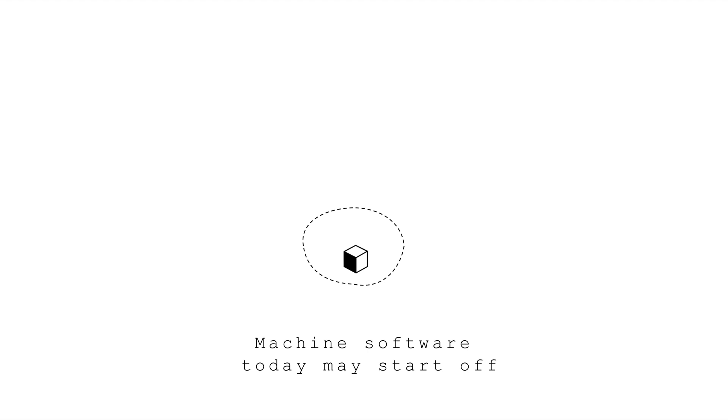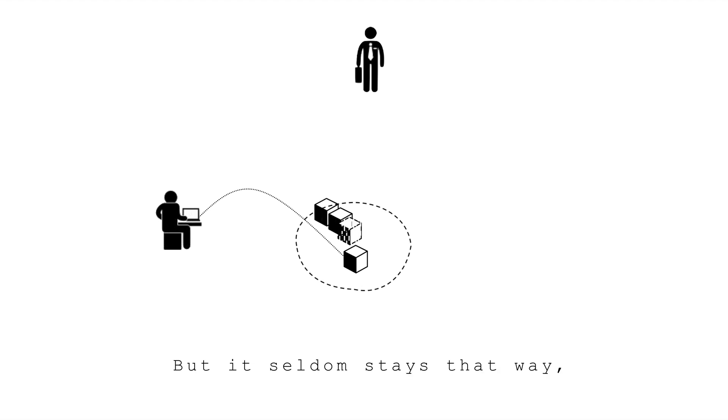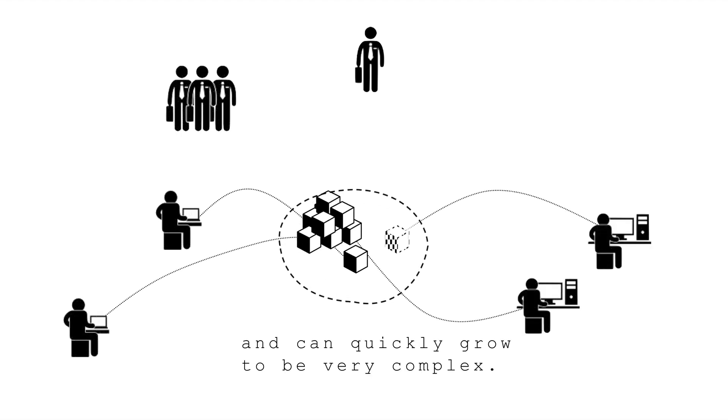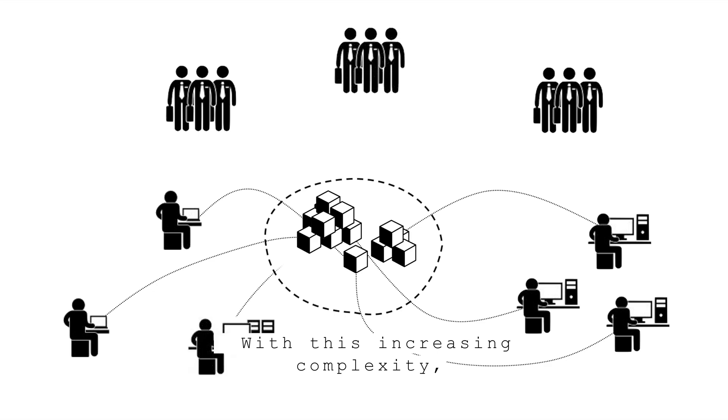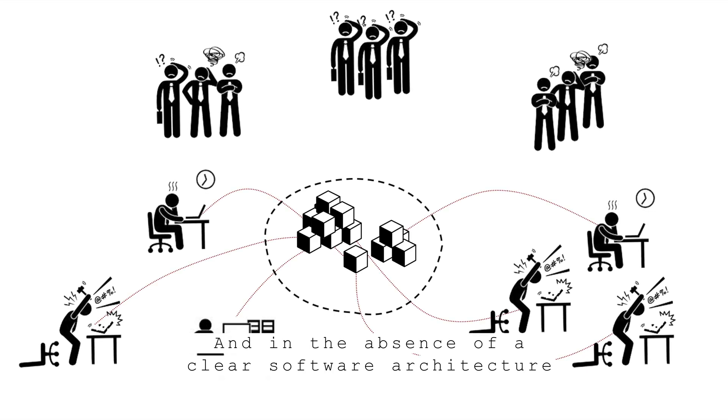Machine software today may start off as a simple package, one manager and one developer to tackle a specific problem. But it seldom stays that way and can quickly grow to be very complex. With this increasing complexity the team also must scale, and in the absence of a clear software architecture, it's not easy to guarantee project success.